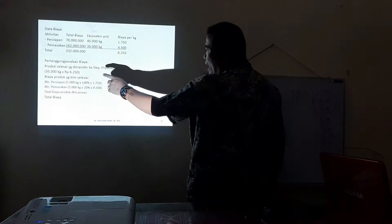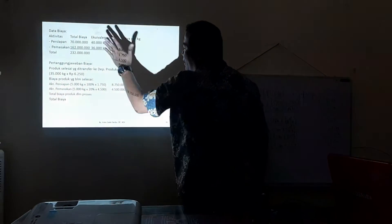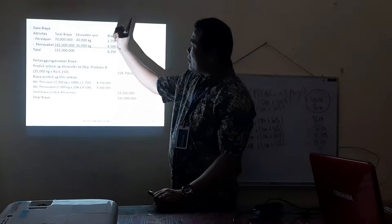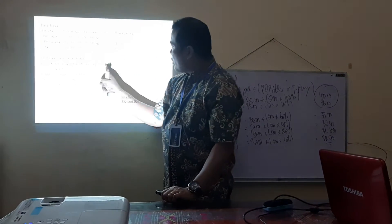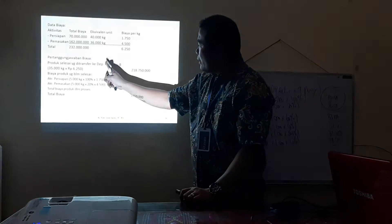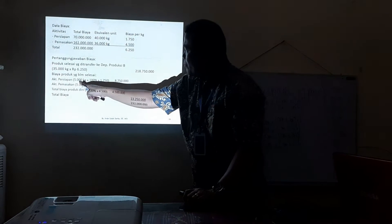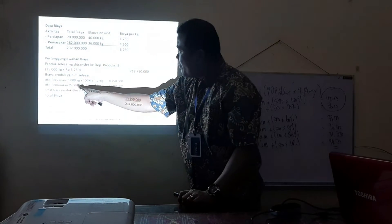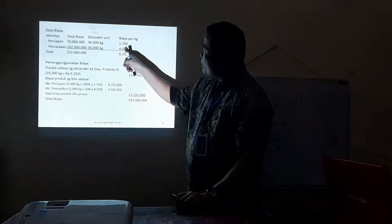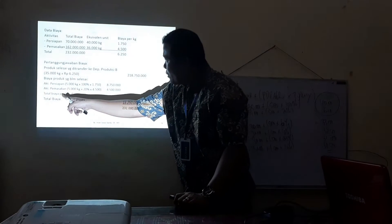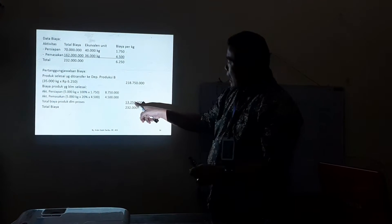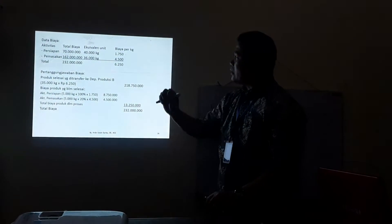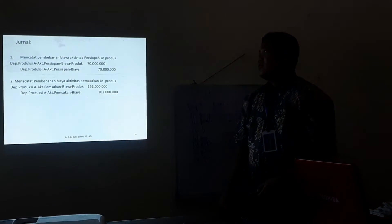Harga pokok produksi per unit untuk Departemen A adalah 6.250. Total biaya di Departemen A sebesar 232 juta. Pertanggungjawaban biaya: yang selesai 35.000 unit dikali 6.250. Ditambah biaya produksi yang belum selesai — aktivitas persiapan 5.000 x 100% x 1.750, pemasakan 5.000 x 20% x 4.500 — sehingga total biaya produksi dalam proses 13.250 dan total biaya 232 juta.